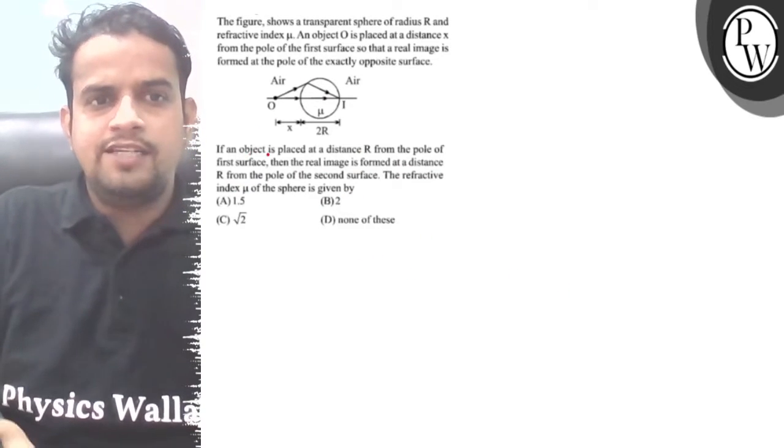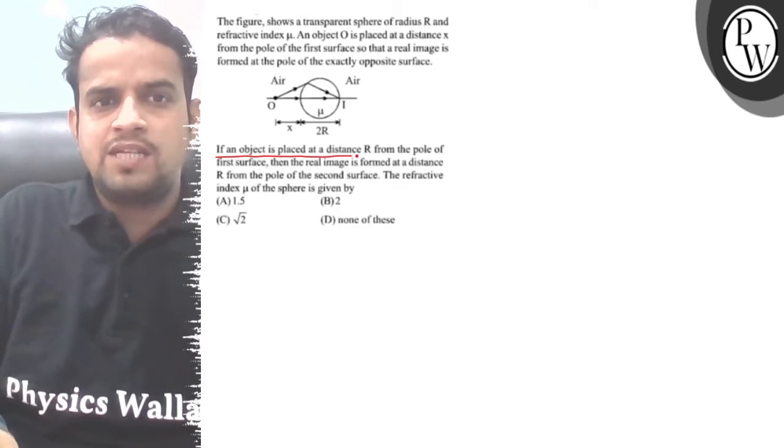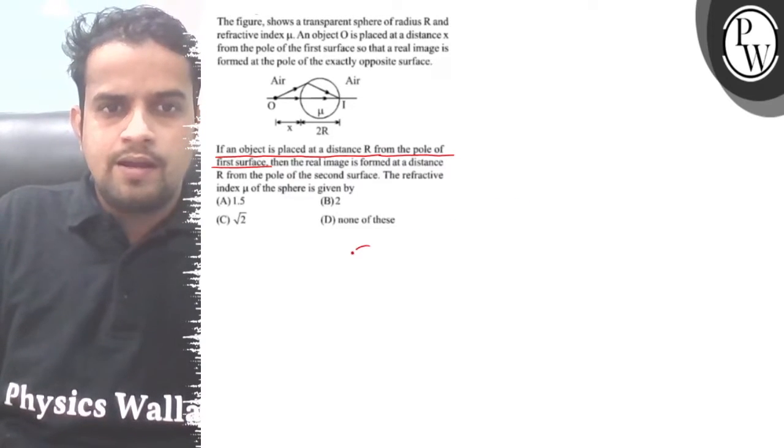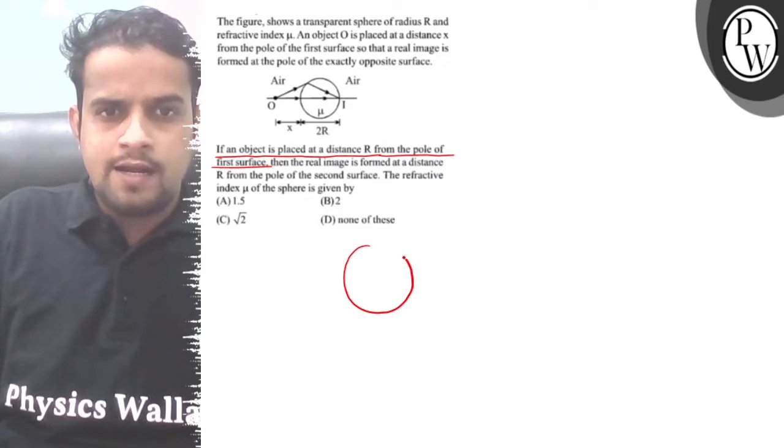If an object is placed at a distance r from the pole of the first surface, okay, no problem.